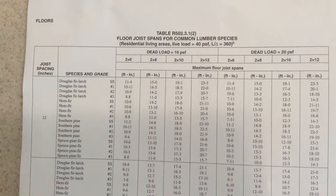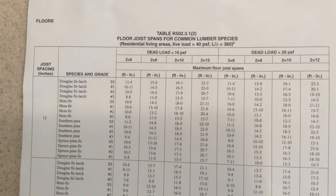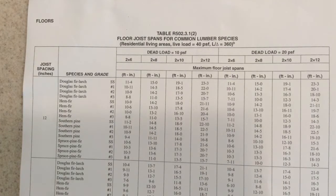The other thing we see is a live load of 40 pounds per square foot. Live loads are those things that are not constant — things that change. They are the loads caused by people, furniture, and appliances. Those kinds of things on a floor are considered live load. For residential living areas we use 40 pounds per square foot, as opposed to sleeping areas where we use 30 pounds per square foot.